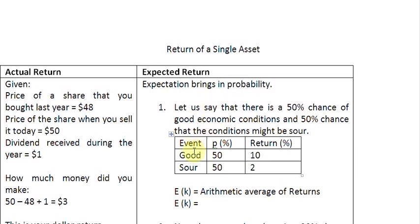We are saying here, for example, that there are two possibilities. Two events can happen. Either we can have a good economic condition in the coming future or we can have a poor economic condition in the near future. And the chance, the probability of both these events happening is equal, 50% each. Now if the economic conditions remain good, your investment in a particular share, for example, is going to return you 10%. And if things go bad, then the same investment may give you just a 2% rate of return.